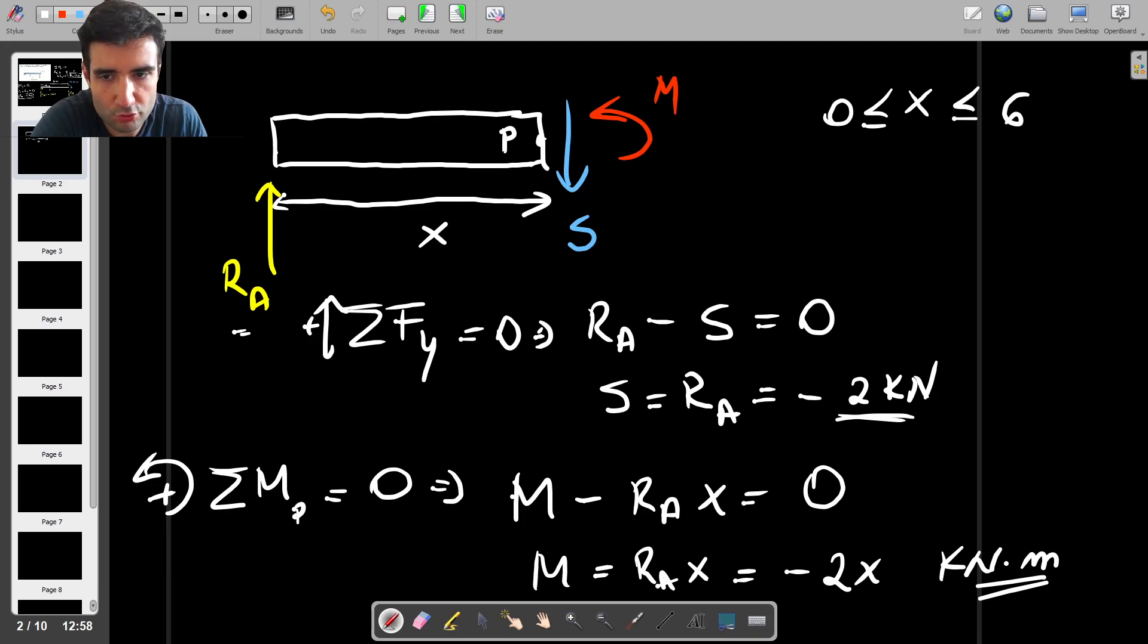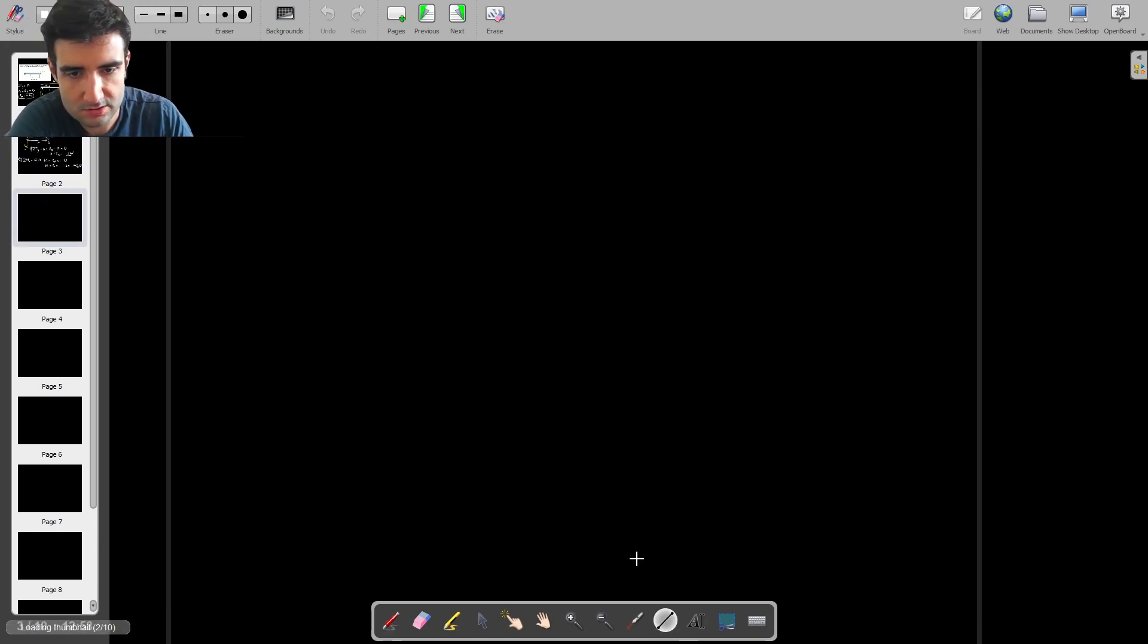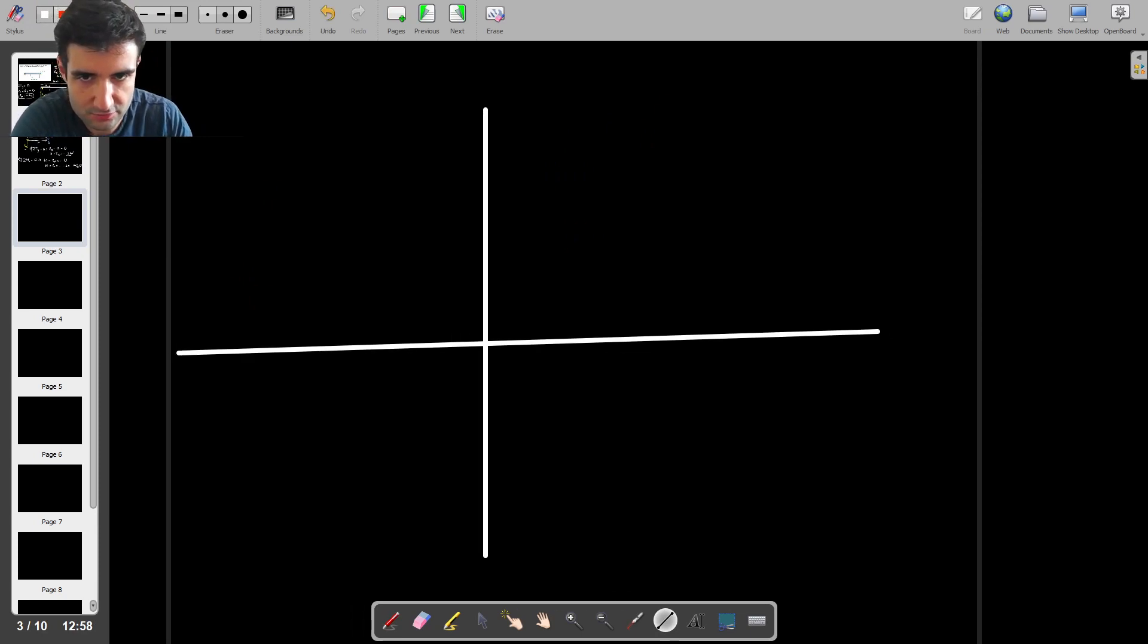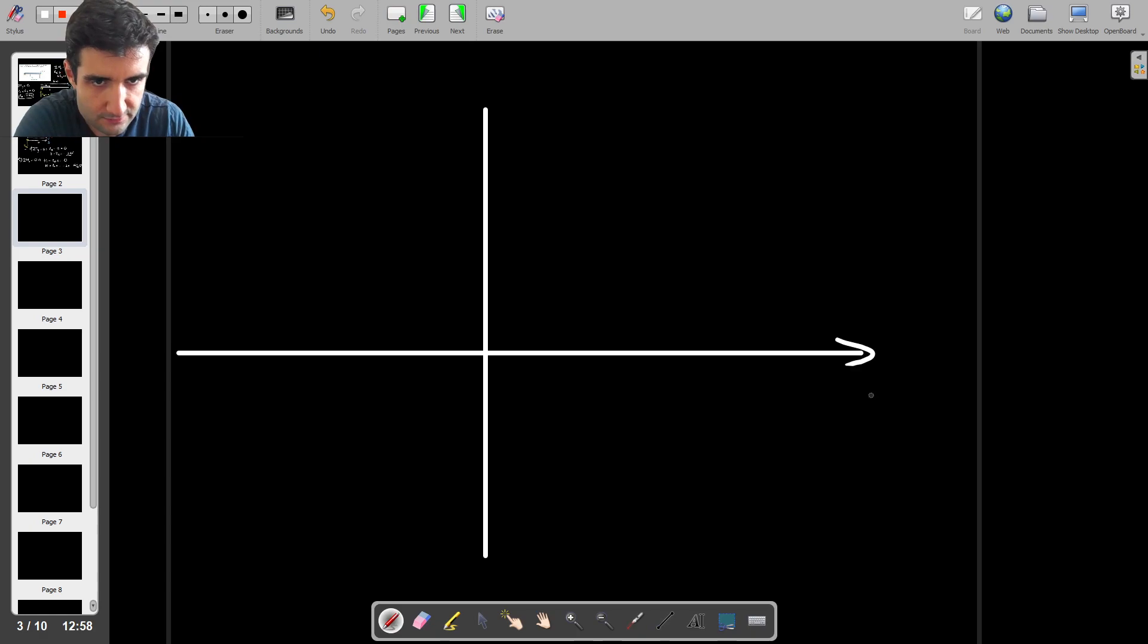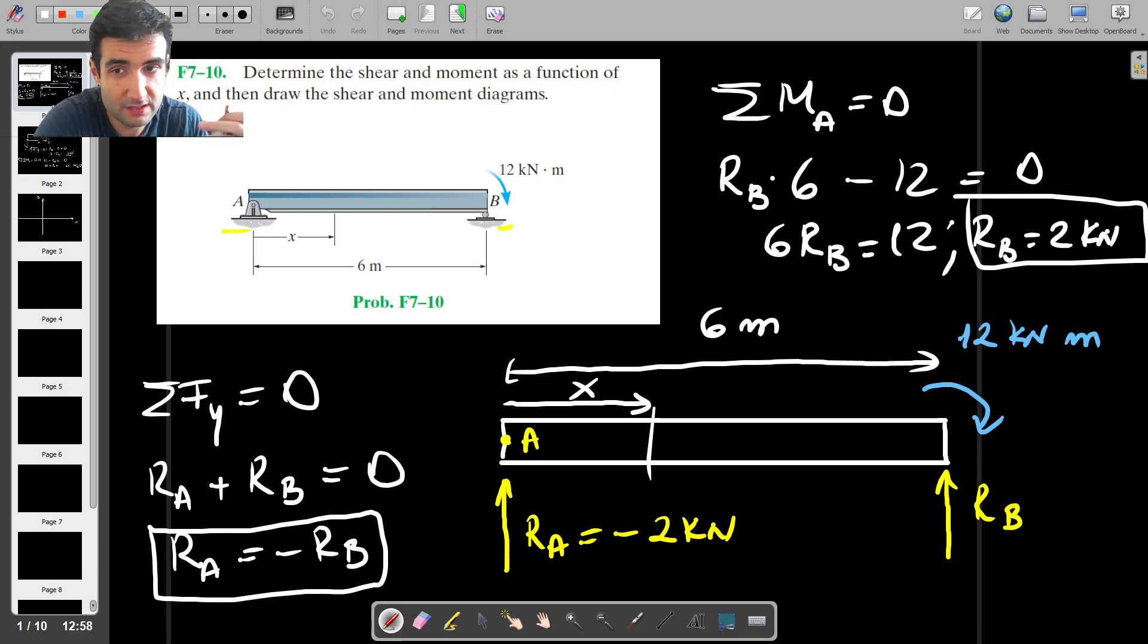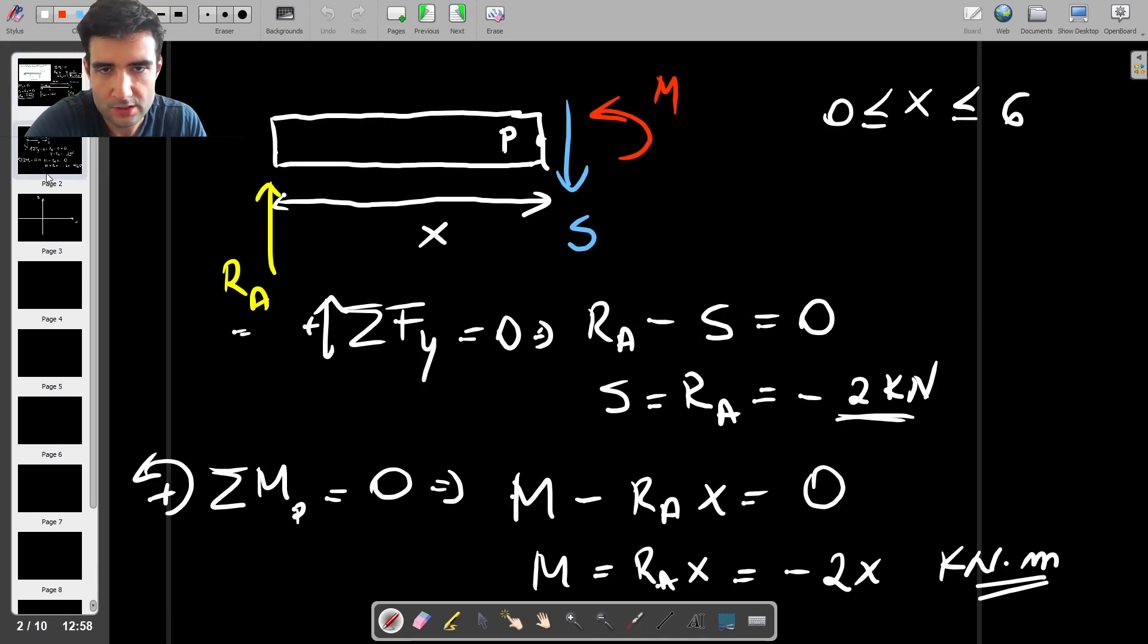It should be pretty easy to plot them. Note in this case, because we don't actually have any point loads anywhere on the beam, or because we don't have any distributed load that starts at some point and ends at a different point, we just have to do this once. So we don't have a piecewise function for the shear force or for the bending moment. We just have the same continuous function all the way through. We don't have any jumps. We don't have any sudden changes of gradient or anything like that.